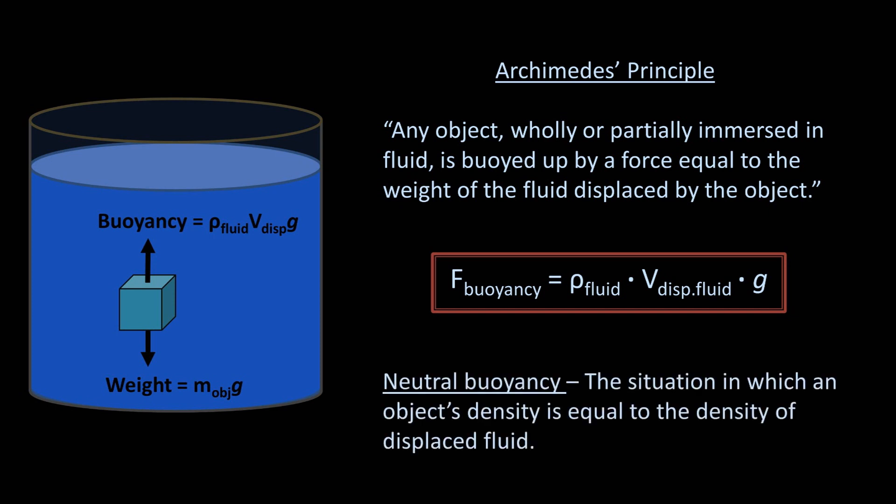Neutral buoyancy is a special situation in which an object's density is equal to the density of the displaced fluid. In other words, its weight is equal to the buoyant force. As you might expect, in this circumstance, the object may seem to hover within the fluid.